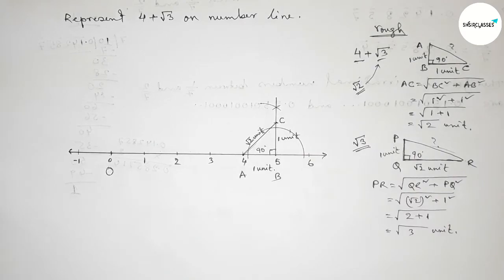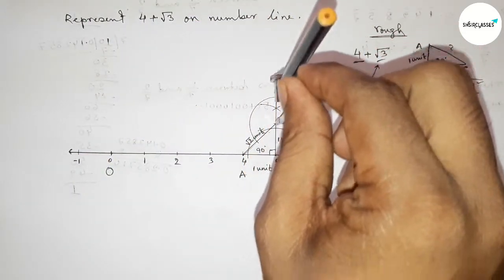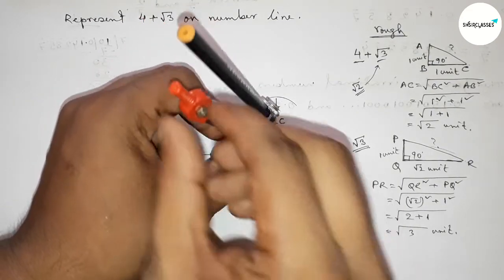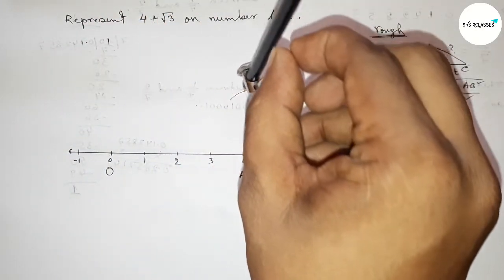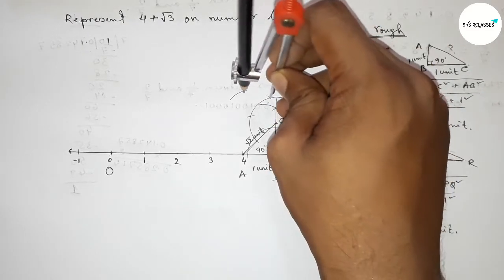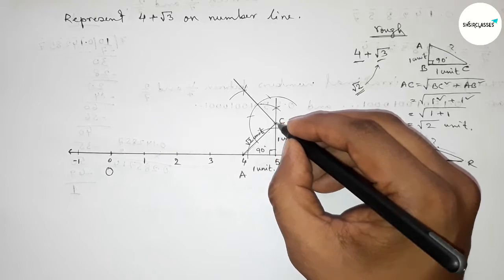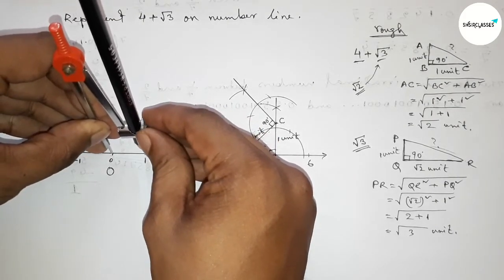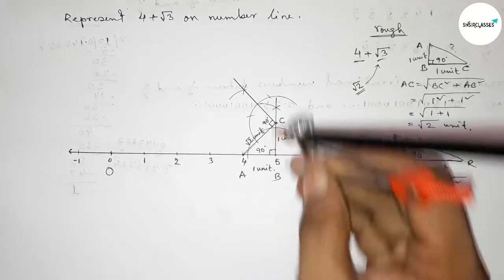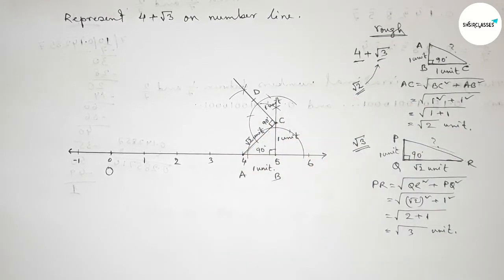AC is root 2 unit. Now we have to construct a 90 degree angle at point C. Putting the compass on point C, taking any length, drawing arcs and cutting with the same length to construct the perpendicular. We got a 90 degree angle at point C. Now taking one unit length — between any two numbers the length is one unit — cutting to get point D. This is 1 unit.